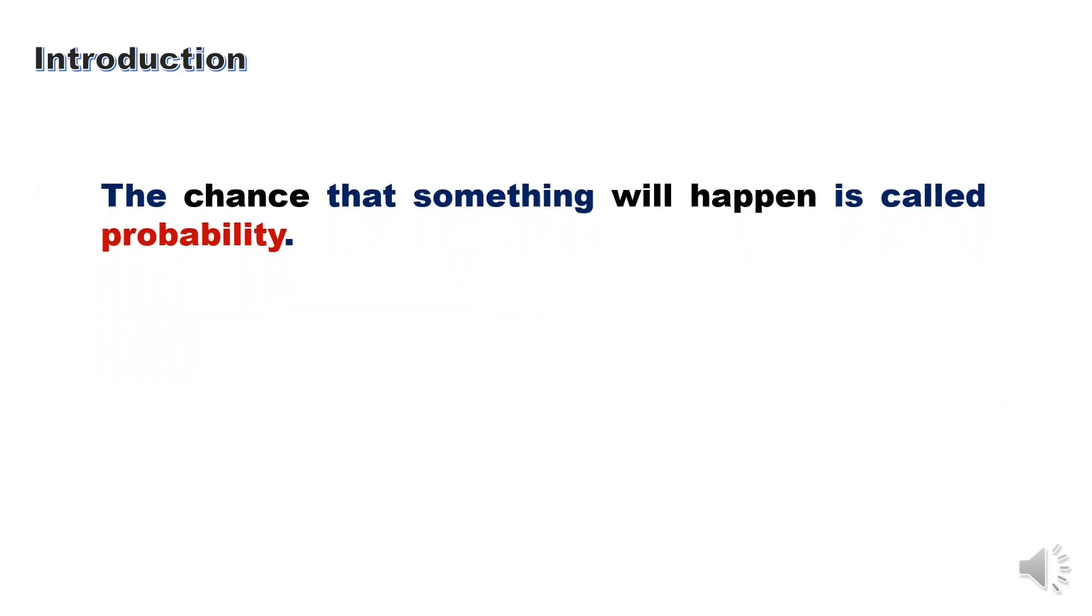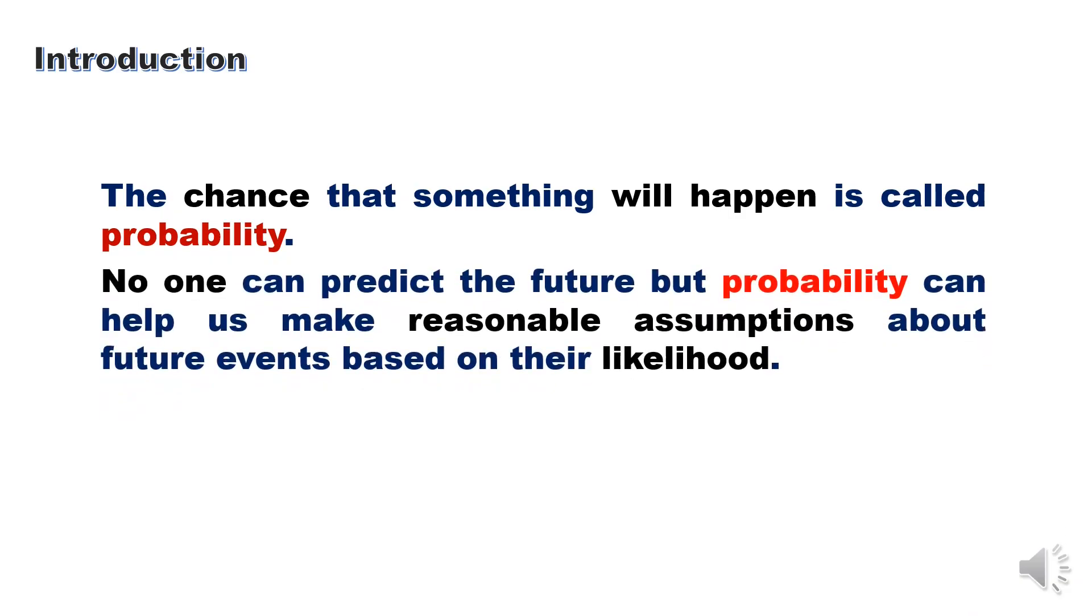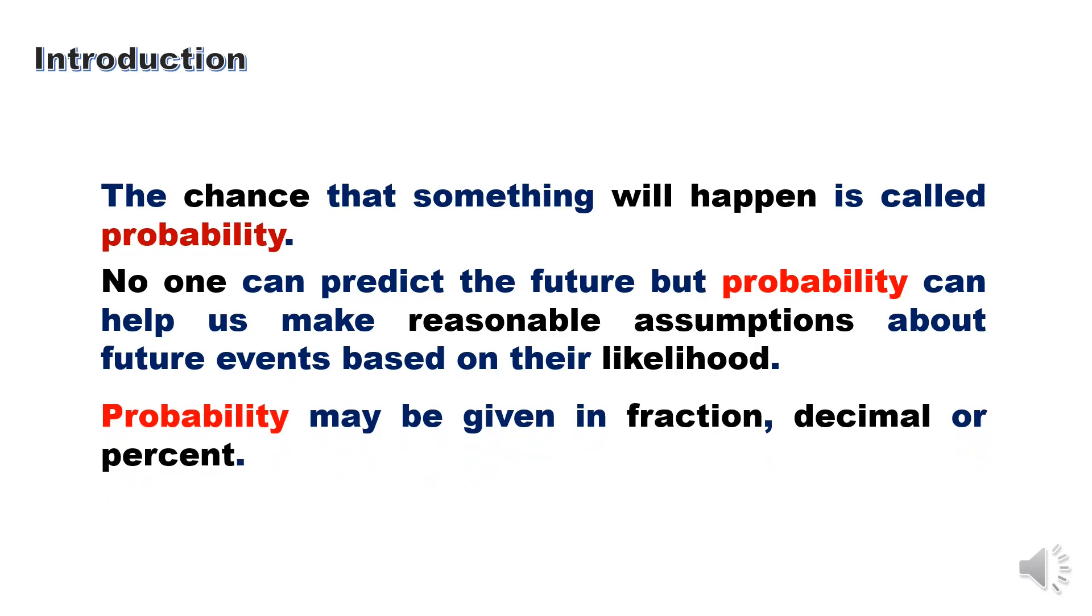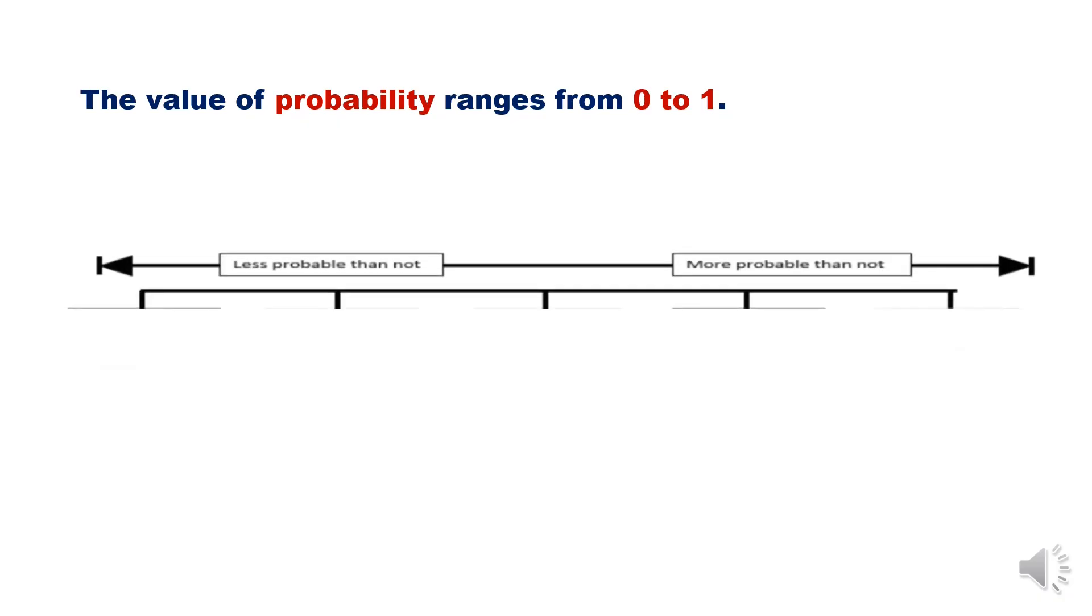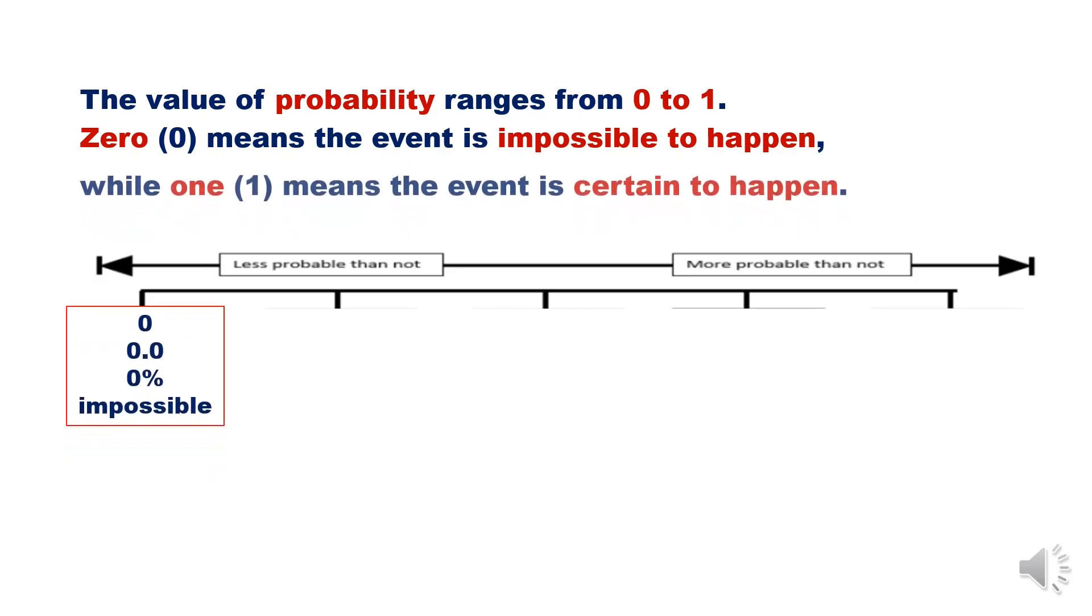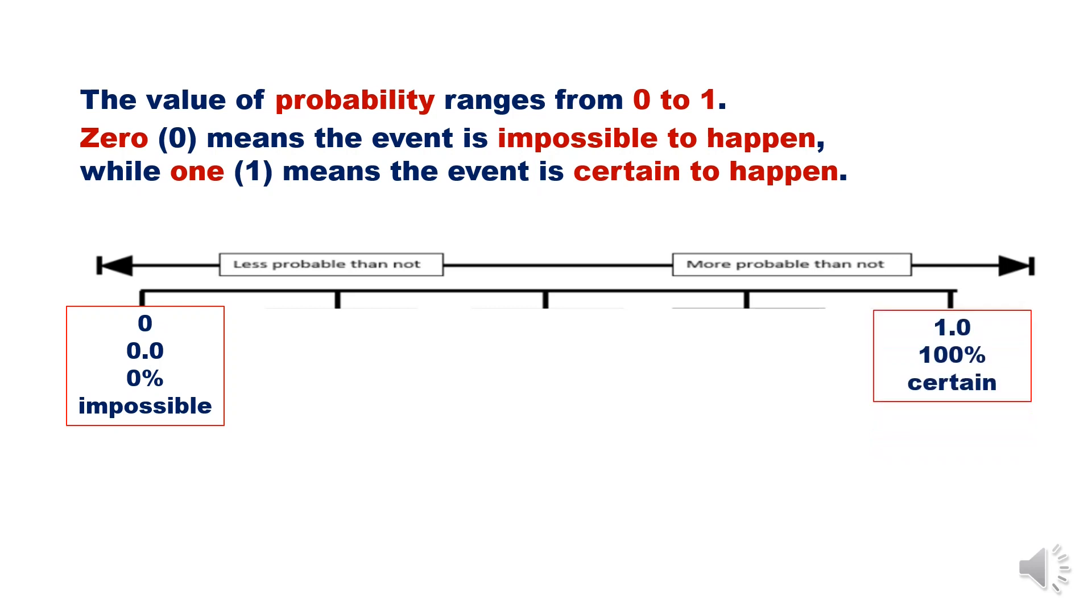The chance that something will happen is called probability. No one can predict the future, but probability can help us make reasonable assumptions about future events based on their likelihood. Probability may be given in fraction, decimal, or percent. The value of probability ranges from 0 to 1. Zero means the event is impossible to happen, while 1 means the event is certain to happen.